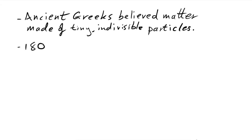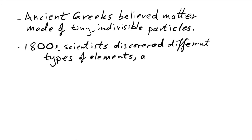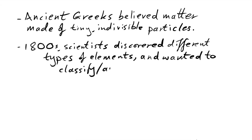So in the 1800s, scientists discovered these different types of atoms — different types of elements. So it's all very well just saying, oh, here's one type of one and one type of another, but they wanted a way of classifying them or arranging them in some way.